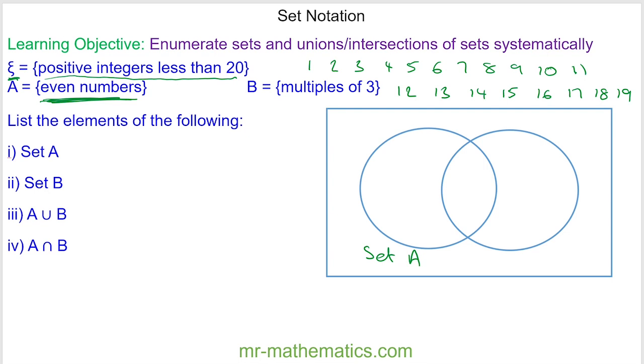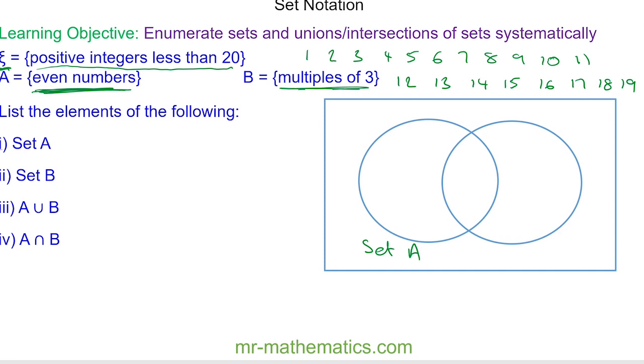However, you can have an even number that is also a multiple of three, and in that case we'll put it within the intersection of the two sets. So we have 2, 4, 6 which goes into both, 8, 10, 12 which also goes into set B, 14, 16, and again 18 goes into set B.